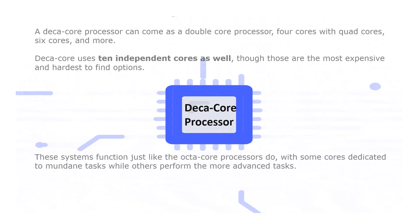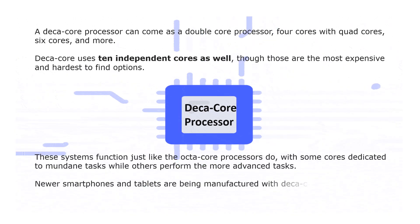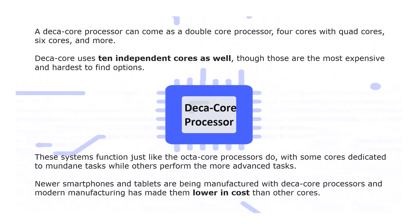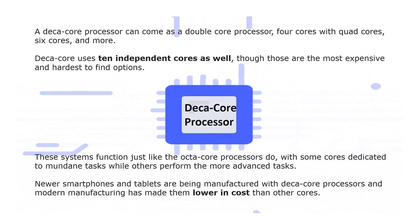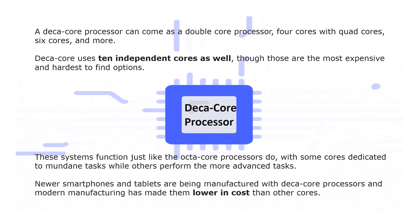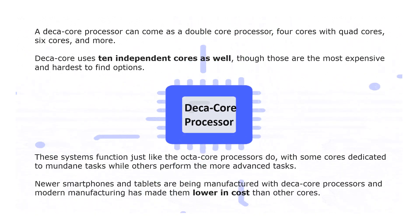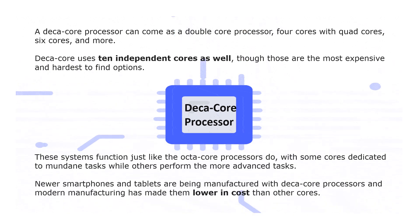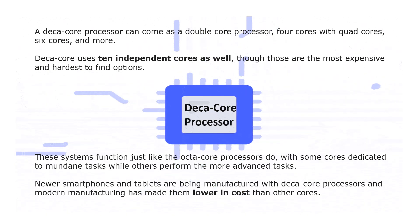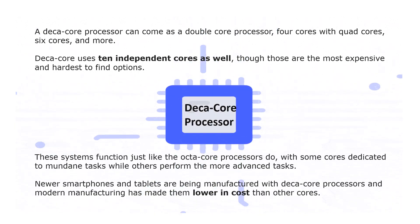The last one is the deca core processor. This comes with combinations including dual cores, quad cores, six cores, and more, and uses 10 independent cores. They are the most expensive and hardest to find. These systems function just like the octa core processors, with some cores dedicated to ordinary tasks while others perform more advanced tasks. Newer smartphones and tablets are being manufactured with deca core processors, and modern manufacturing has made them lower in cost.